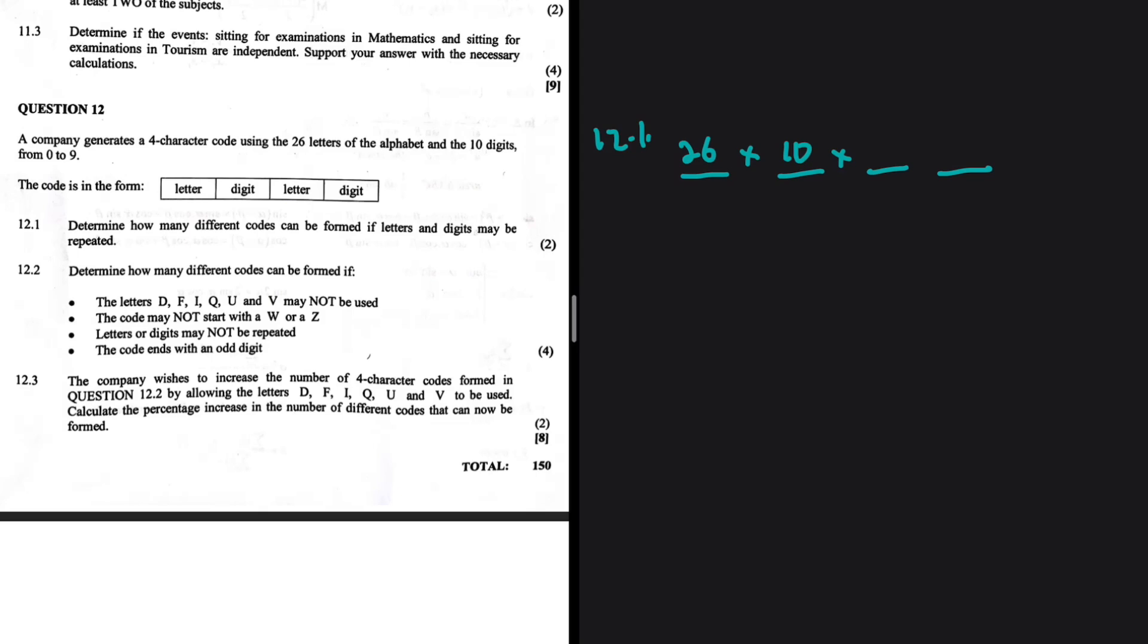When we fill the third spot with the letter, we still have 26 options. And when we fill the fourth spot with the digit, we still have 10 options. So the answer is 26 squared multiplied by 10 squared, which equals 67,600. That is the answer to 12.1.